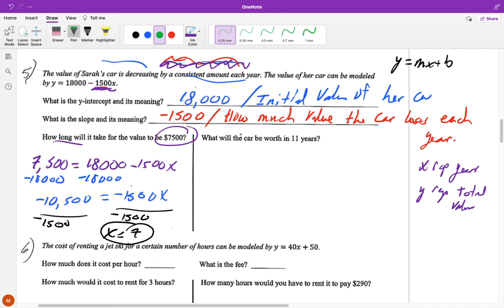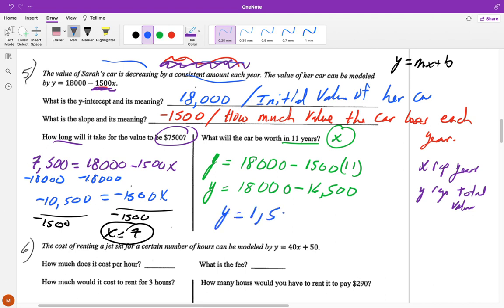Now for this one it says what will the car be worth in 11 years? So they're telling us how long so that is representing our x. So now we'll say y is equal to 18,000 minus 1500 times 11. Well 1500 times 11 is equal to 16,500 so y is equal to 18,000 minus 16,500 which is then meaning that y is equal to $1,500.